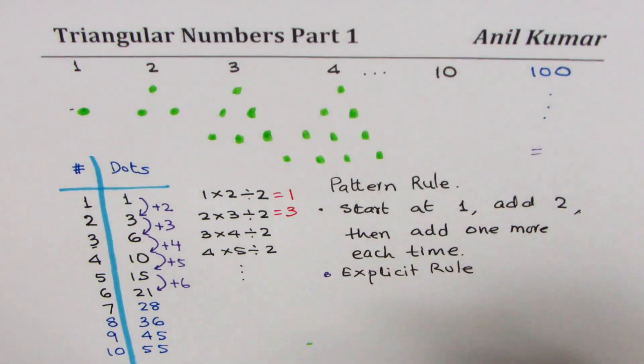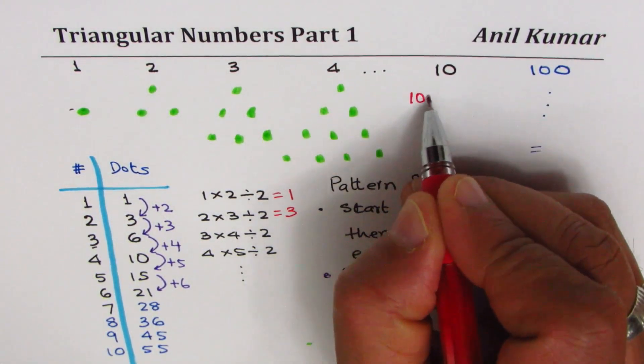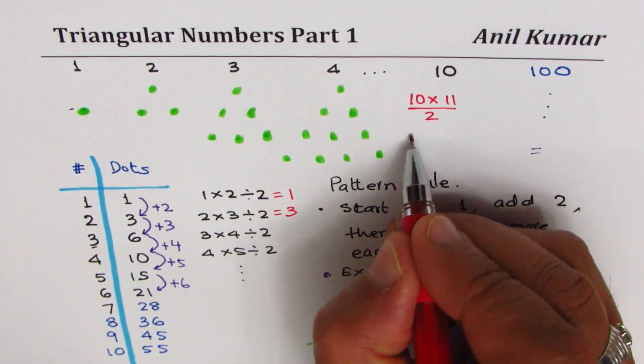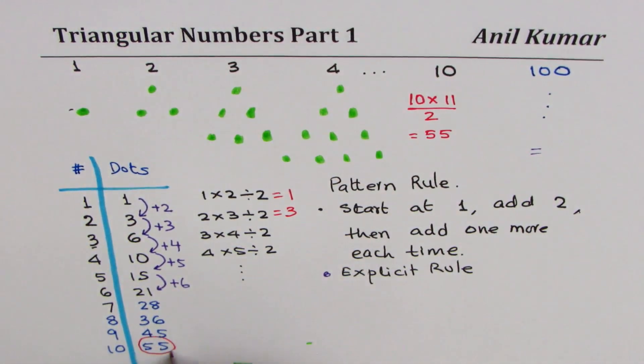So for ten, what can I write? For ten, I can say it is ten times eleven divided by two. So that gives me fifty-five. The number matches. Do you see that?